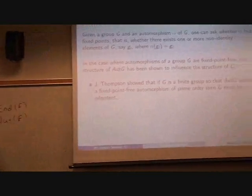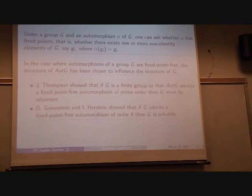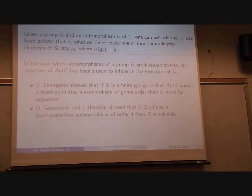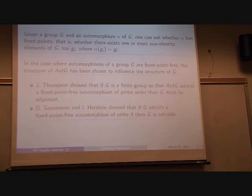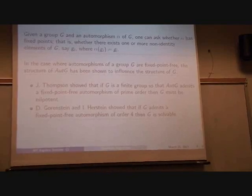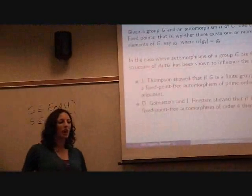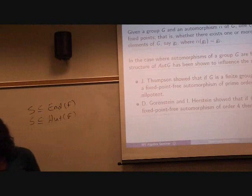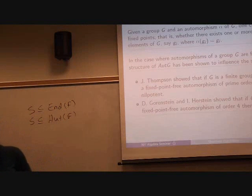We have another further motivation that Gorenstein and Hirstein showed that if G admits a fixed point free automorphism, specifically of order 4, then the group itself is solvable. And a group is solvable if it has a finite derived series, if it ends in finitely many steps.